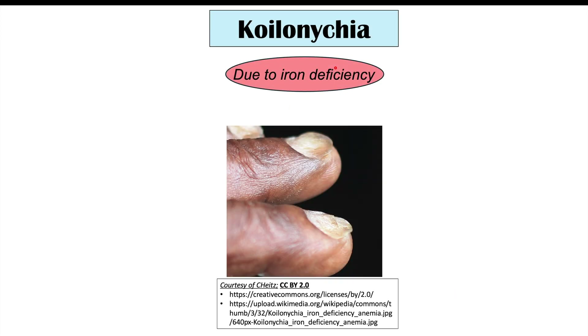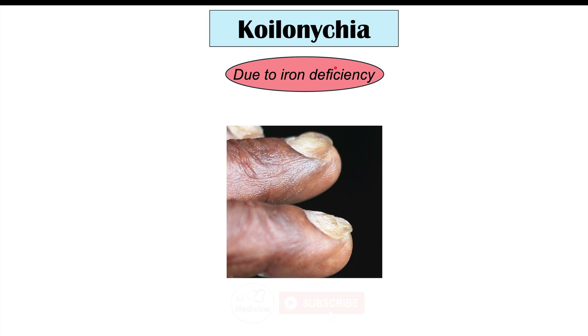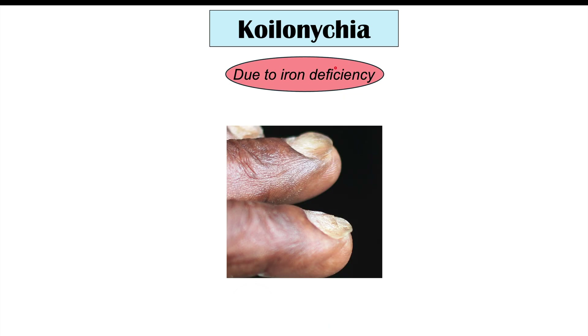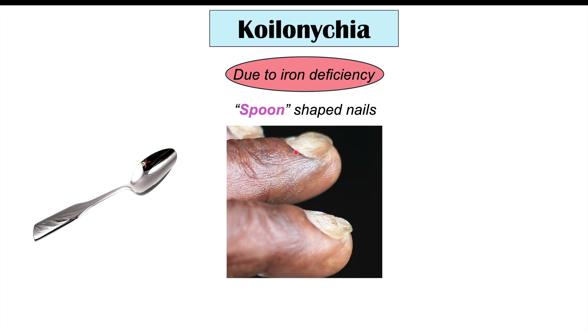One of the nail findings we can see in patients with celiac disease is what we call koilonychia. Koilonychia is a nail finding due to iron deficiency. Patients with celiac disease can become iron deficient because they're not absorbing iron properly, which can lead to certain nail findings. Koilonychia presents as spoon-shaped nails — if you look at this image, you can see they resemble a spoon.